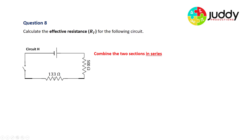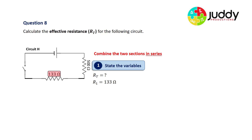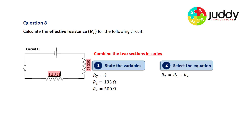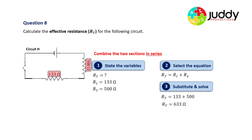Our final step: combine these two sections which are in series. We want to find the overall effective resistance RT of this circuit. The first resistor has a value of 133 ohms and the second a value of 500 ohms. Selecting the series equation, RT equals R1 plus R2. Substituting our values, we find the effective resistance for circuit H to be 633 ohms.